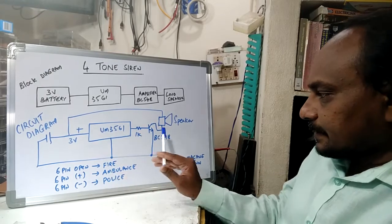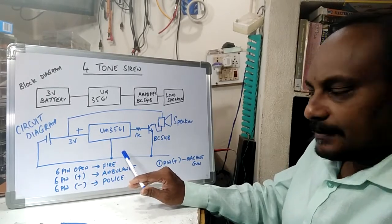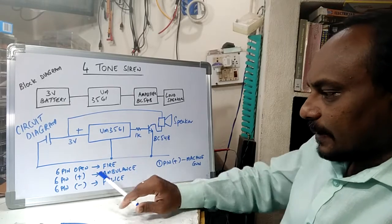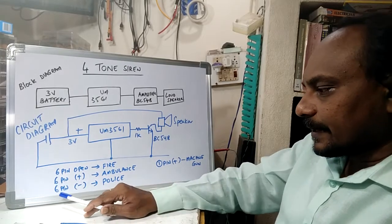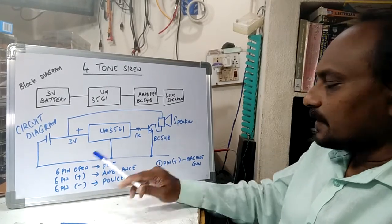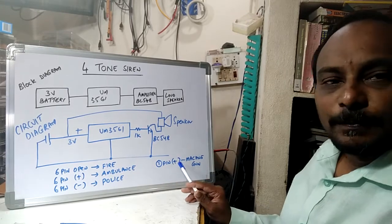Now, after constructing this circuit, you will be listening a fire brigade siren. If you want an ambulance, you have to connect 6th pin to the positive supply. If you want a police siren, you have to connect 6th pin to negative supply. If you want a machine gun siren, you have to connect the first pin to positive supply.